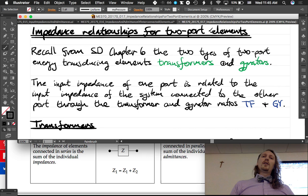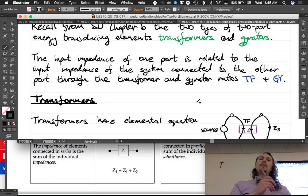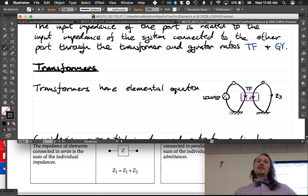So let's do two-port. Recall from chapter six of the system dynamics text that there are two types of two-ports: energy transducing elements, transformers and gyrators. The input impedance of one port is related to the input impedance of the system connected to the other port through the transformer and gyrator ratios.